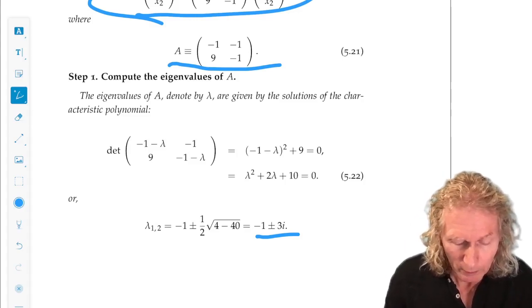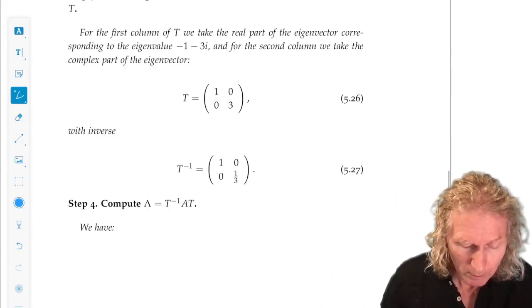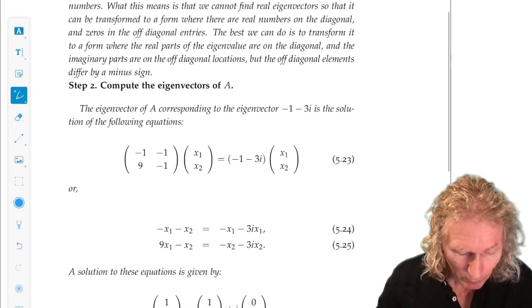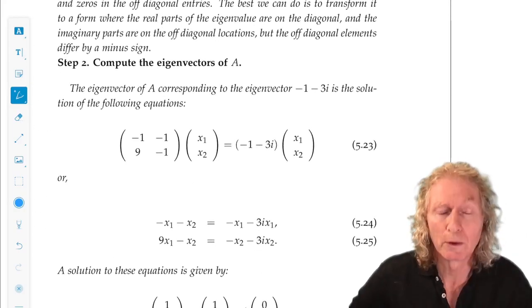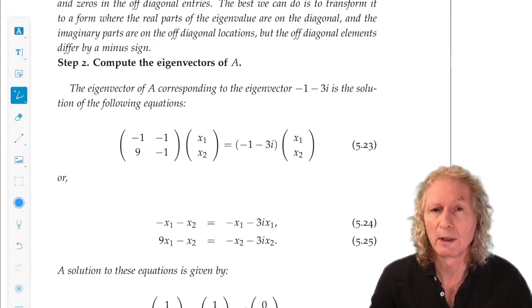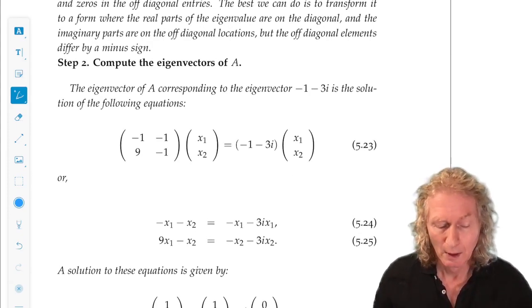Well, we have two eigenvalues. They're different. So, what do we do next? Well, we're going to compute the eigenvectors corresponding to the eigenvalues.